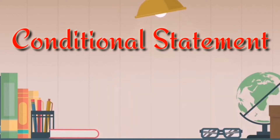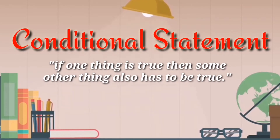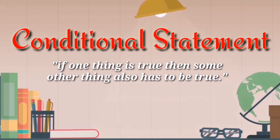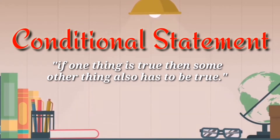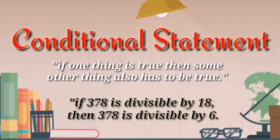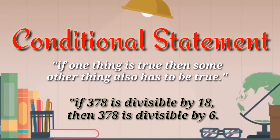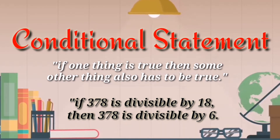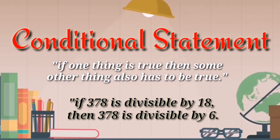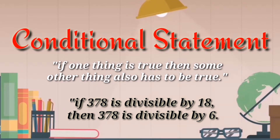A conditional statement says that if one thing is true, then some other thing also has to be true. For example, if 378 is divisible by 18, then 378 is divisible by 6. The conditional qualifiers in the sentence are the words 'if' and 'then.'